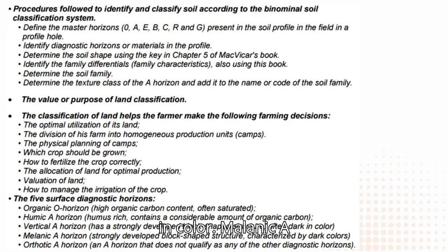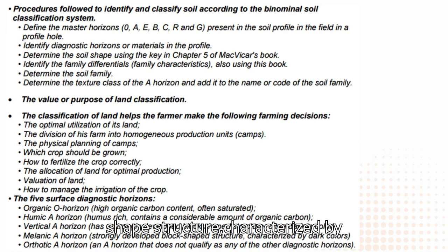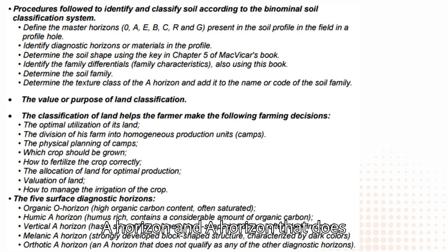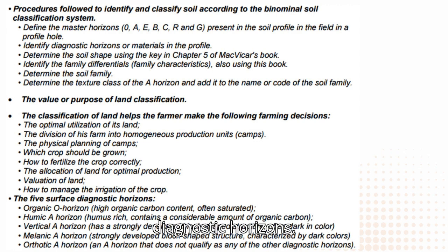Melanic A horizon — strongly developed block-shaped structure, characterized by dark colors. Orthic A horizon — an A horizon that does not qualify as any of the other diagnostic horizons.